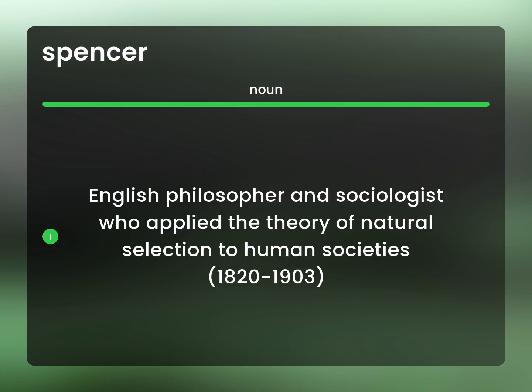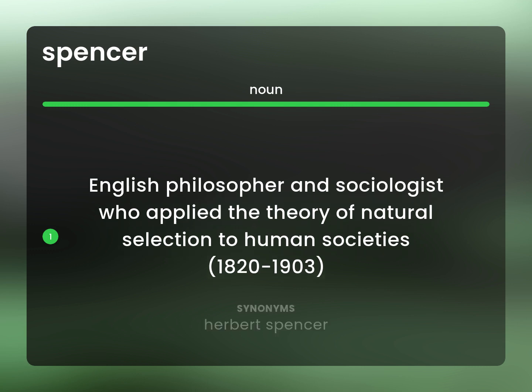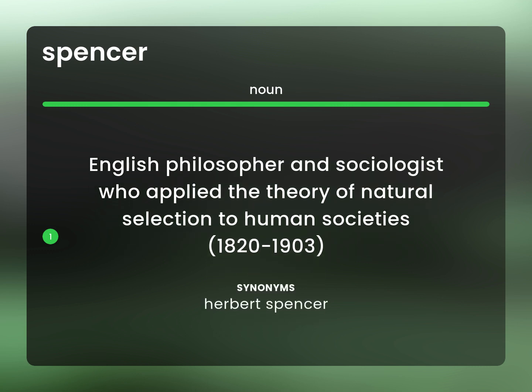Herbert Spencer. English philosopher and sociologist who applied the theory of natural selection to human societies, 1820-1903.